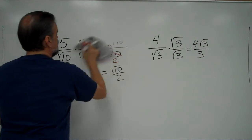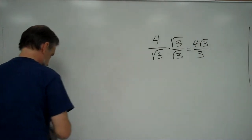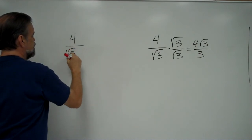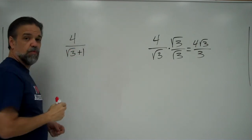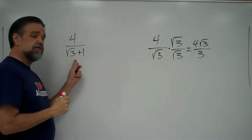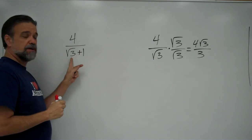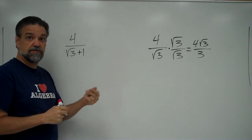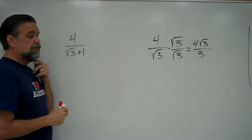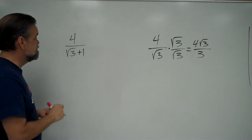What about when you have 4 divided by the square root of 3 plus 1? The square root of 3 plus 1 is also an irrational number, right? When you add an irrational number to a rational number, you get an irrational number. So what would we do there? Well, it's a similar process, but not exactly the same.